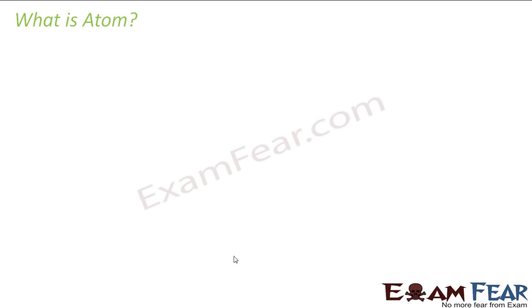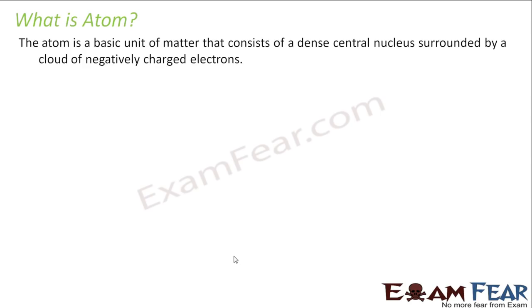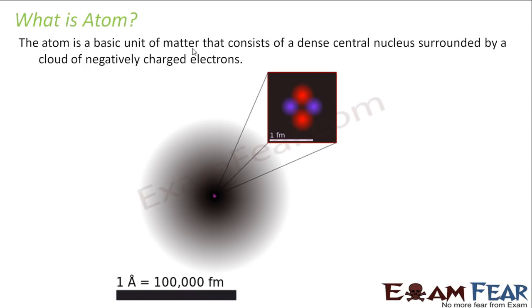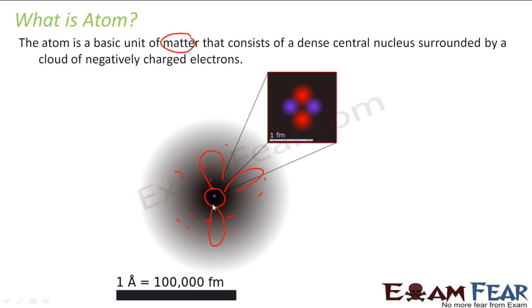Let's start the chapter with atom. What is atom? We have already studied atom in the past chapter. Atom is nothing but it is the basic unit of matter. It consists of a nucleus surrounded by a negative charge cloud of electrons. Electrons can be anywhere — they keep moving and are found in different orbitals, such as S-orbitals and P-orbitals.